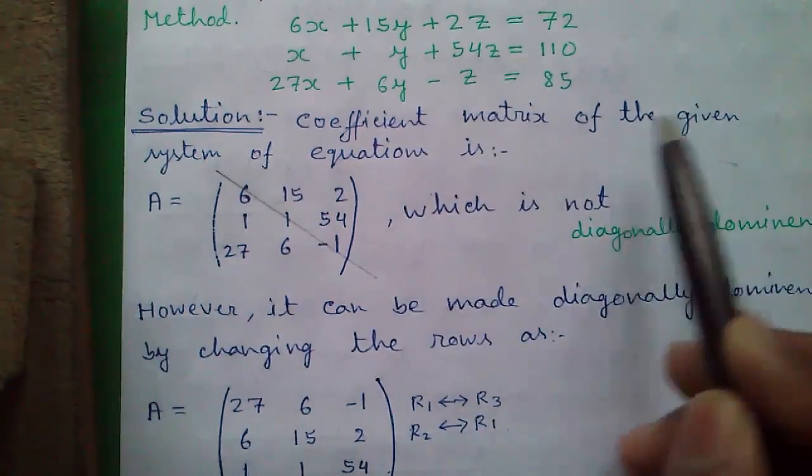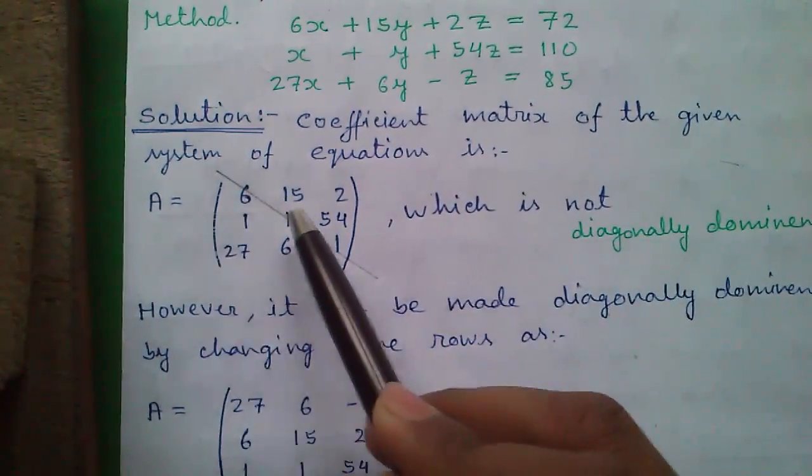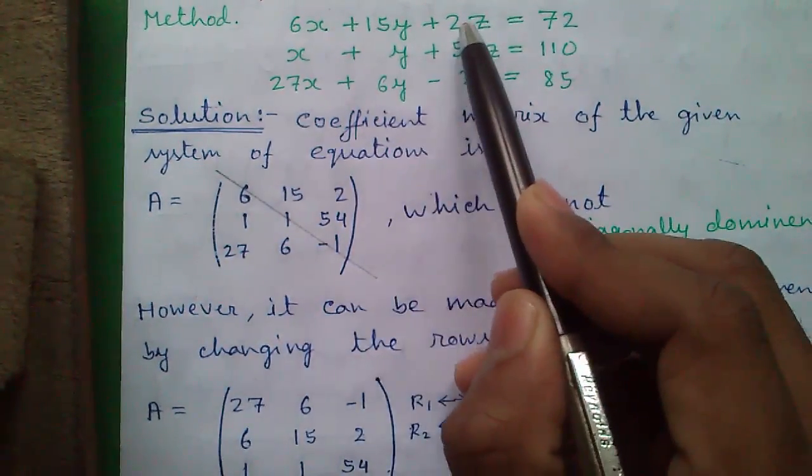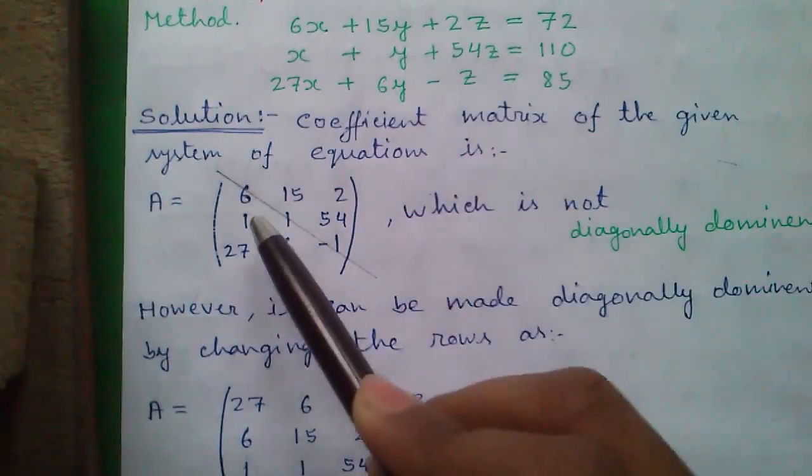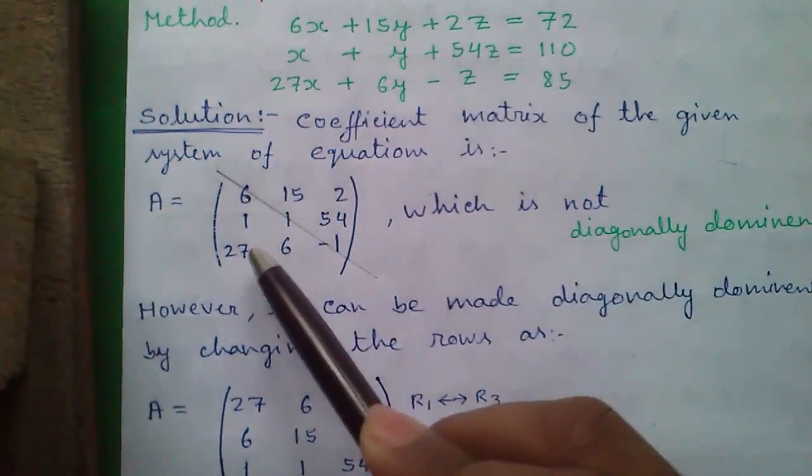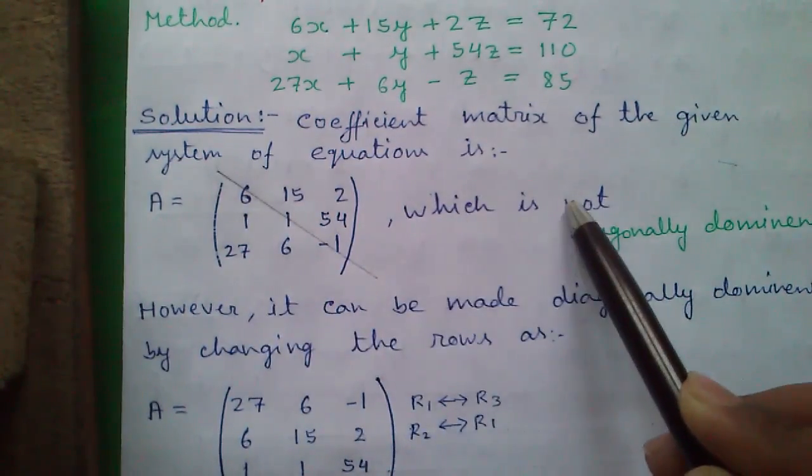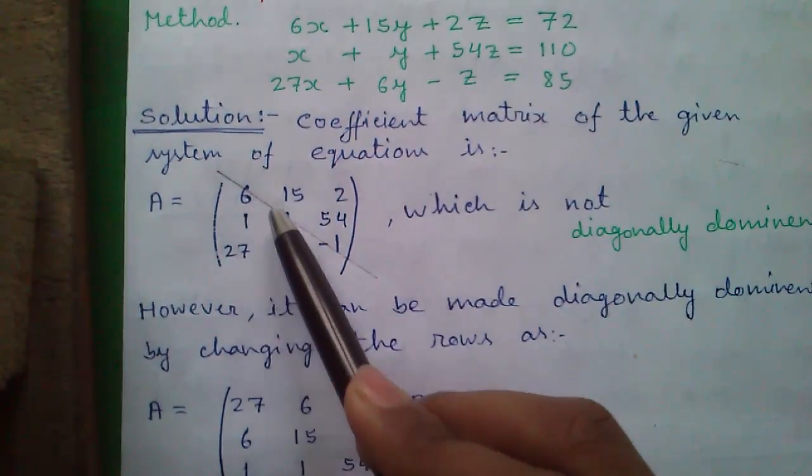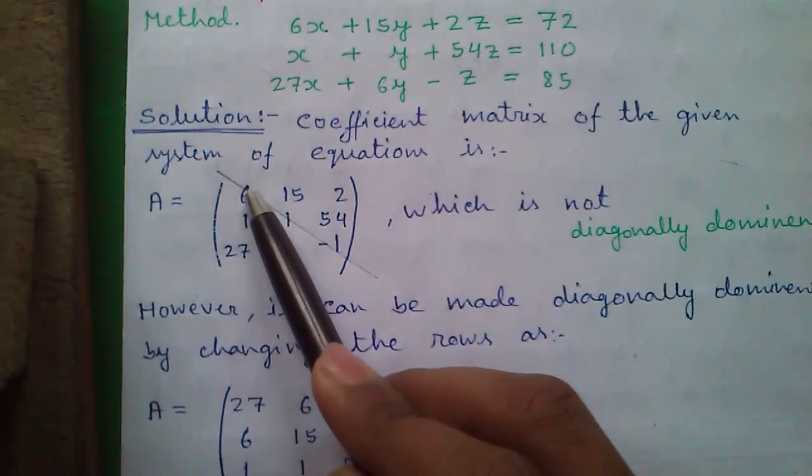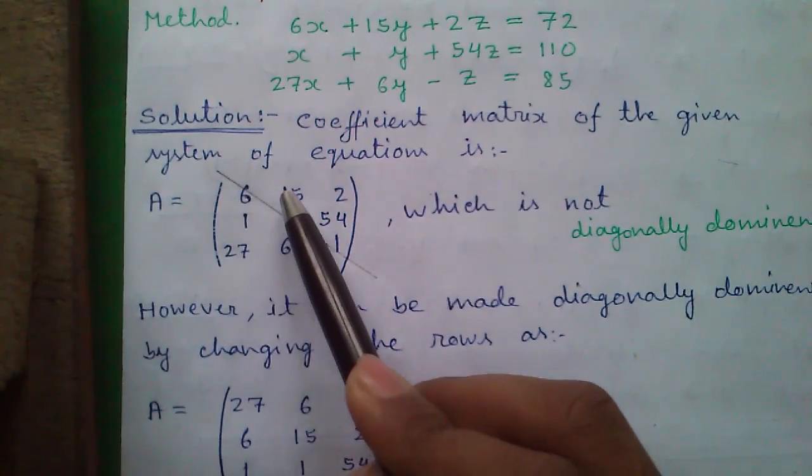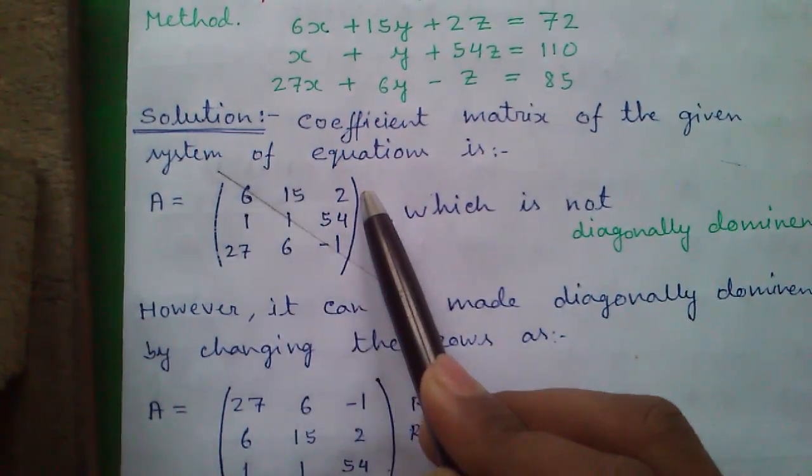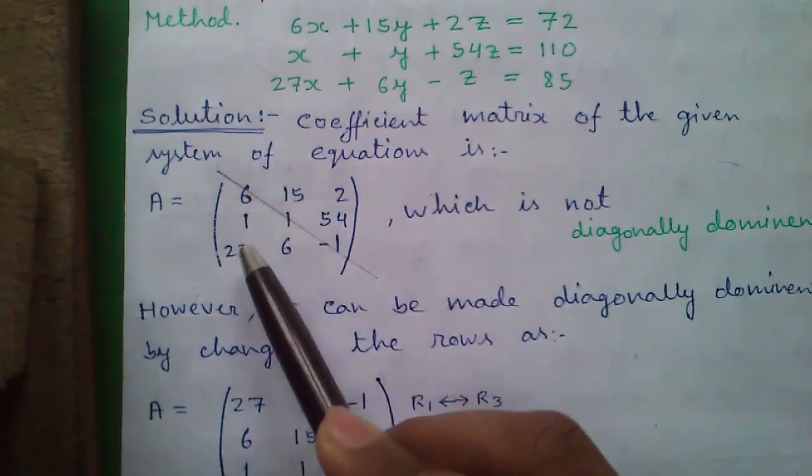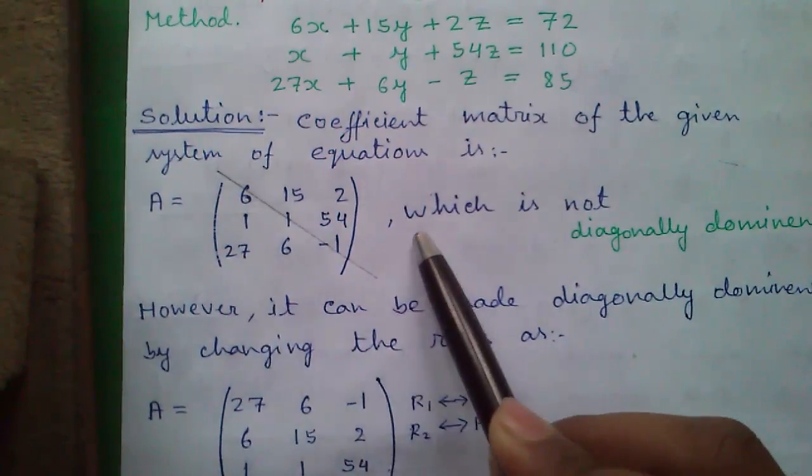Coefficient matrix of the given system of equations is A equals to this. Coefficient matrix means writing all the coefficient values: 6, 15, 2, 1, 1, 54, 27, 6 and minus 1, which is not diagonally dominant. Diagonally dominant means these diagonal elements 6, 1 and minus 1, each must be equal to or larger than rest of the elements row-wise and column-wise. Here 6 is not larger than 15 or 27 so it's not diagonally dominant.